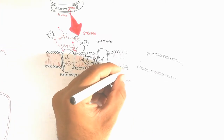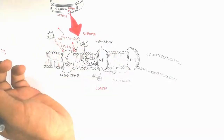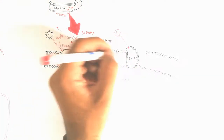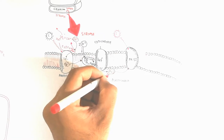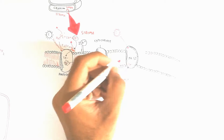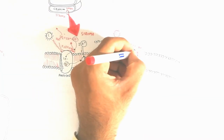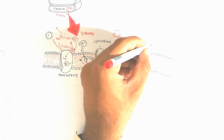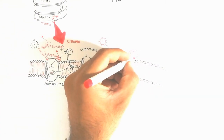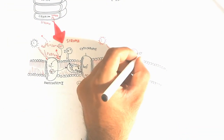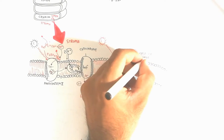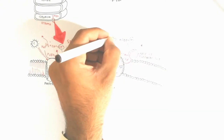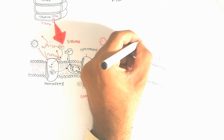The two plastocyanin molecules accept the two electrons and carry them into Photosystem 1. In Photosystem 1, light of 700 nanometer wavelength is absorbed to excite the electron to a primary acceptor. Ferredoxin proteins — present as pairs — accept the two electrons. The NADP+ reductase enzyme then uses two electrons and two protons to make NADPH2.